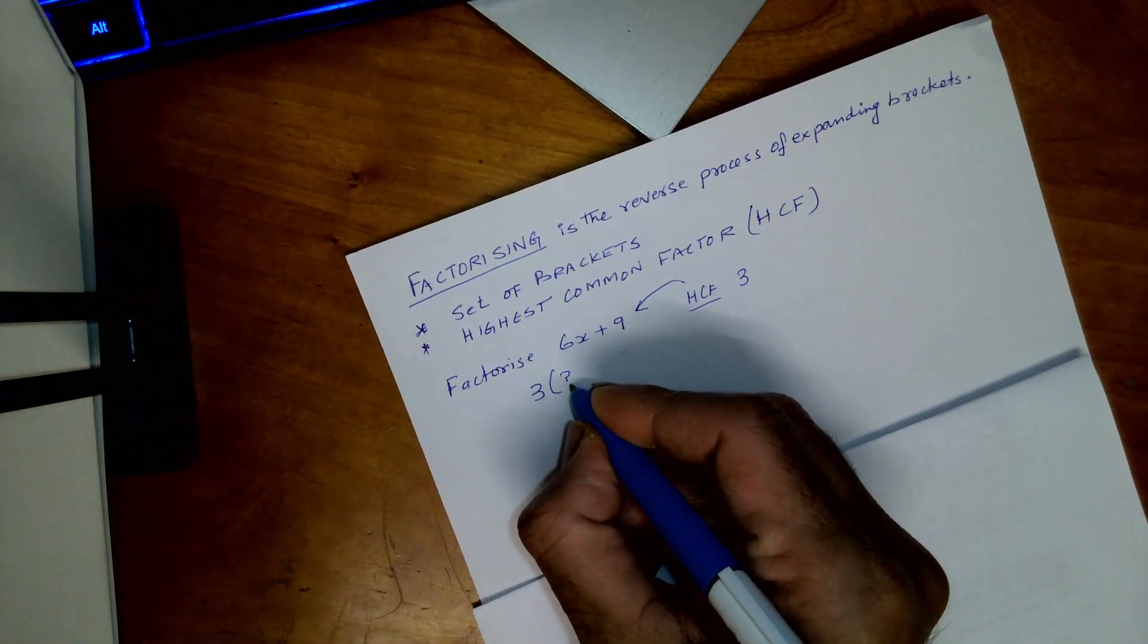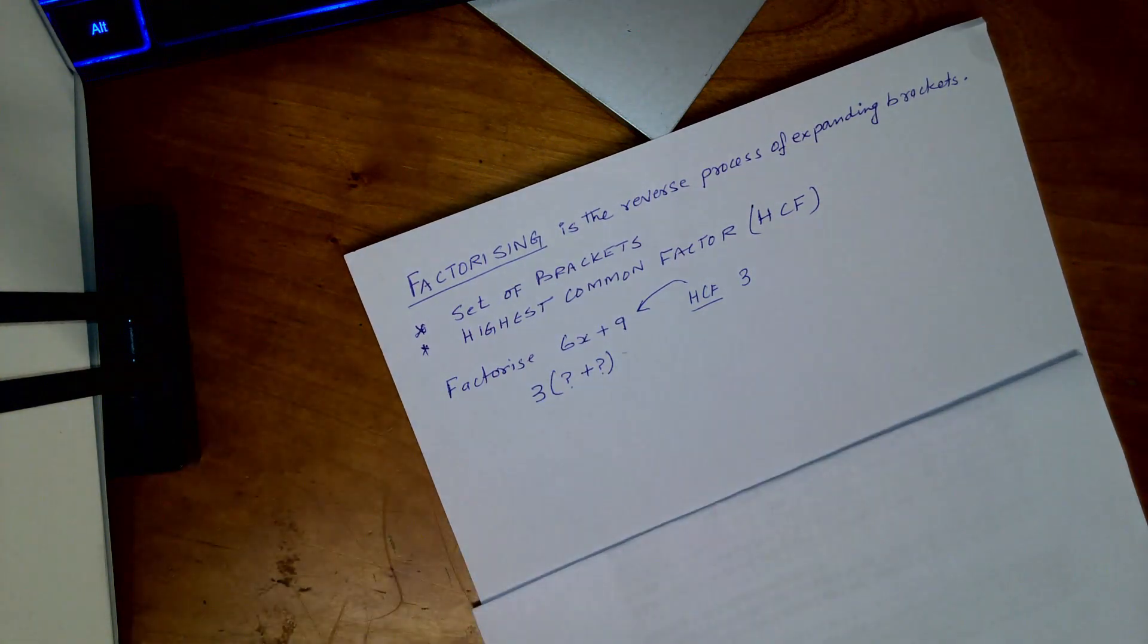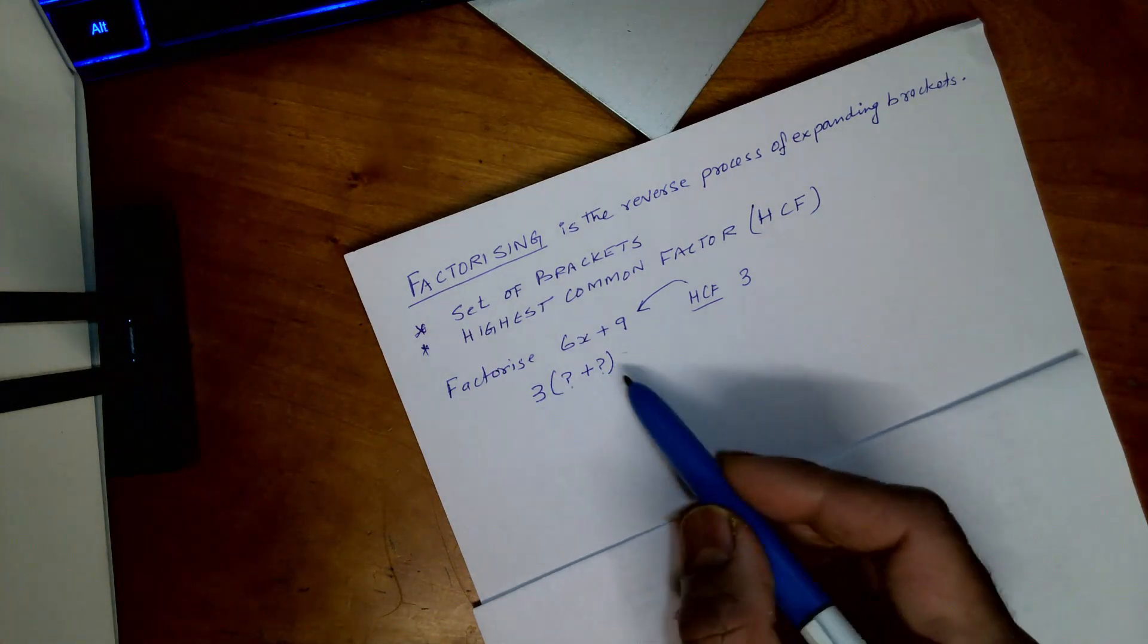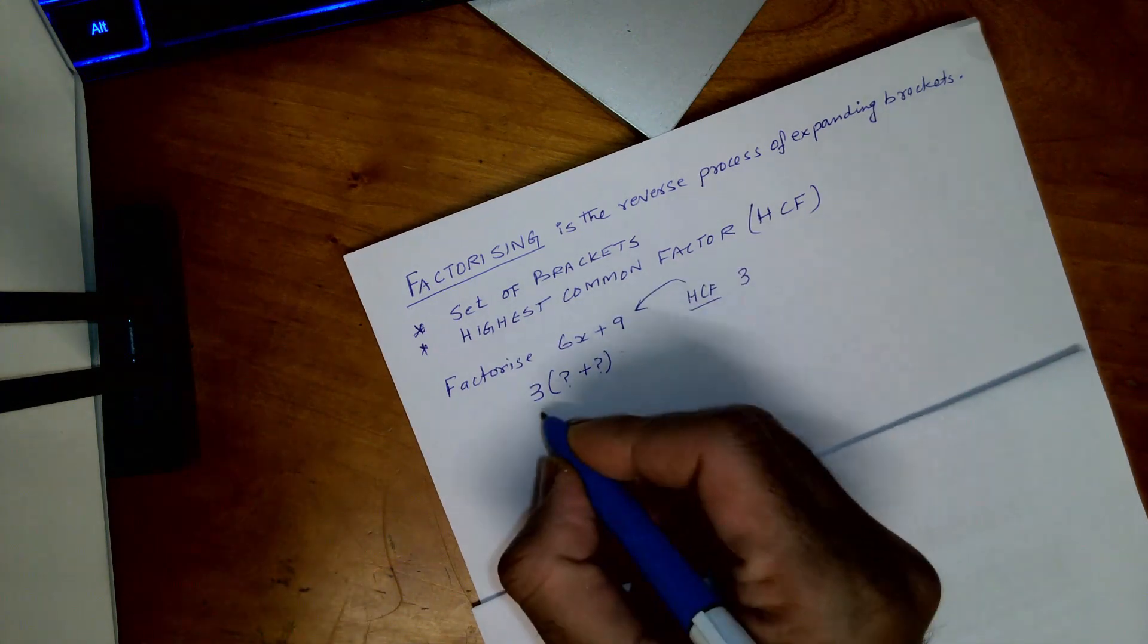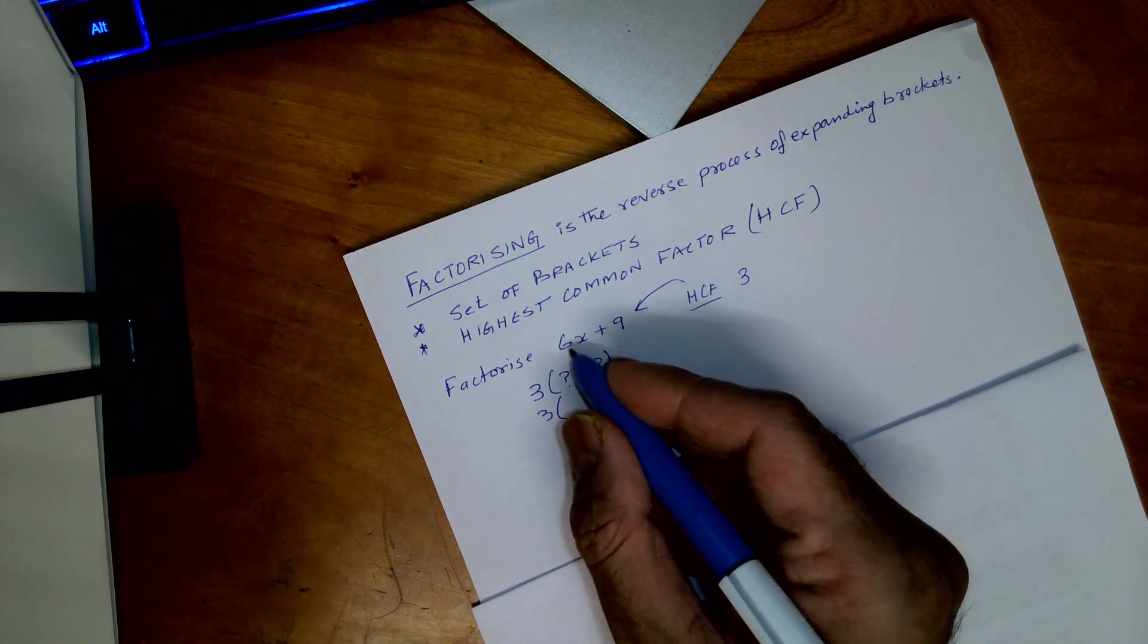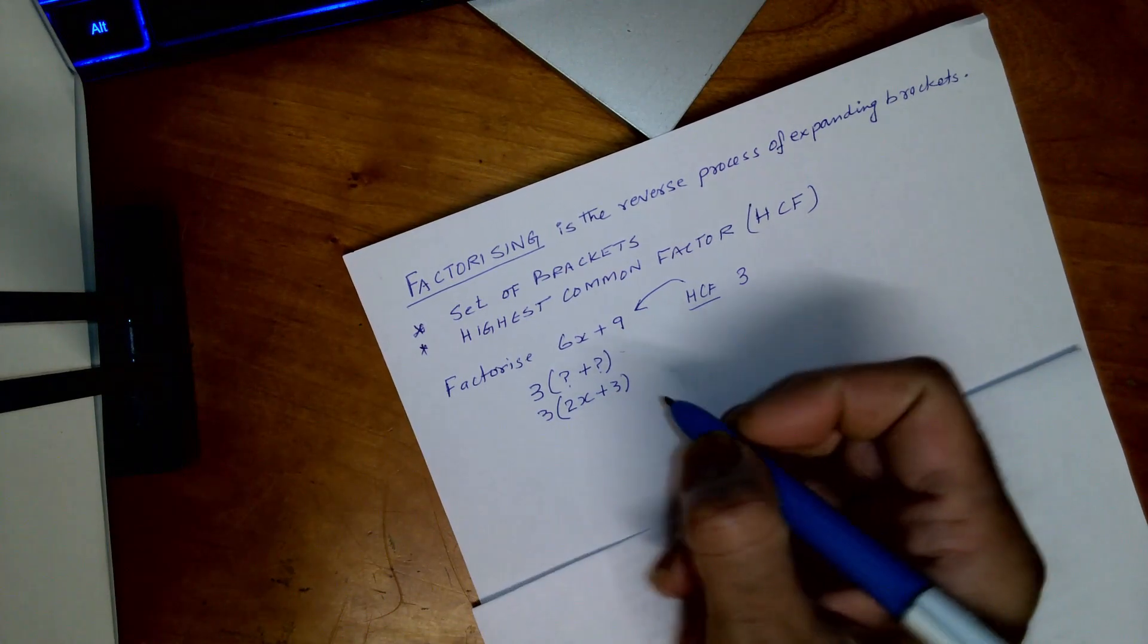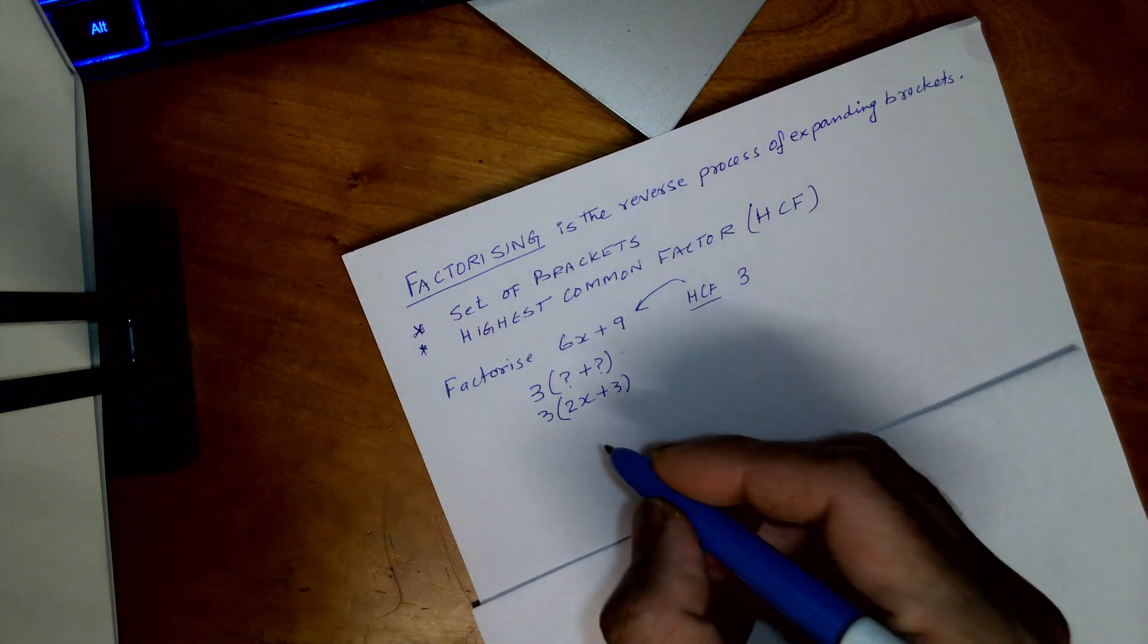So if HCF is 3, what we would have here is 3 times 2x plus 3. Now if you reverse this one, so let's say if you reverse this, which means that if you expand that one you should have the same answer as this.